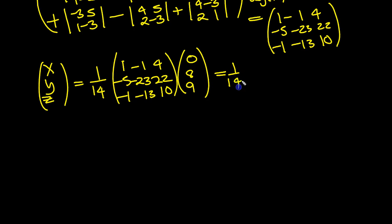And let's work out what we've got, shall we? 1 over 14. Now, first row, first column entry. So it's these three put alongside these three. 1, 0 is 0, -1 times 8 is -8, 4, 9's are 36. 36 minus 8 is 28, which looks good. Second row first, -5 times 0 is 0, -23 times 8. I'll write that out explicitly. And then plus 22 times 9. And then the third entry is -1 times 0 is 0, -13 times 8. And then you've got plus 10 times 9, haven't you? Yeah?